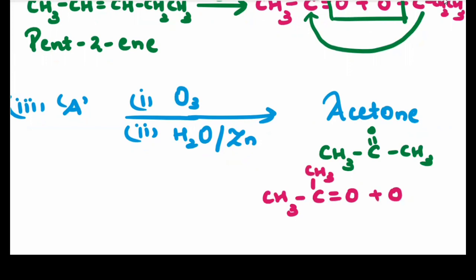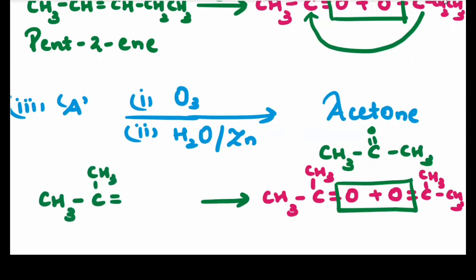The second molecule will be arranged in this way: CH3, CH3 and CH3. Simply remove oxygen from both the carbons and then the reactant will be CH3C double bond C(CH3)CH3.